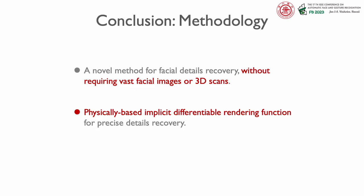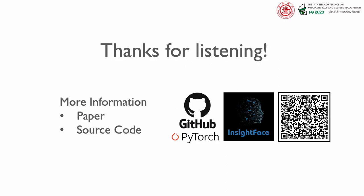In summary, we propose a novel facial geometric detail recovery algorithm using only one single face image. Our method restores a completed high-fidelity texture and uses a physically-based implicit differentiable renderer to enhance the details of the coarse facial geometry. Despite using implicit functions, our implicit-to-mesh transfer method ensures that our detailed geometry can be used in applications that require triangular meshes. Our paper and source code are available through the QR code on the screen. Thanks for watching.